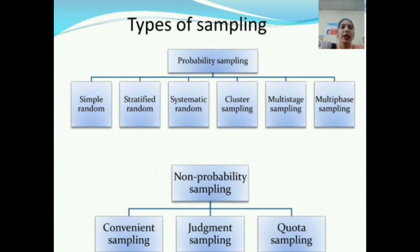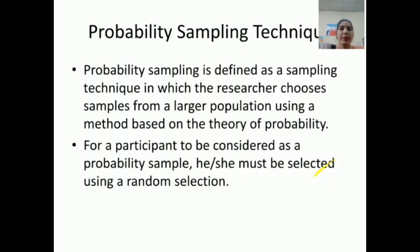There are two types of sampling: probability and non-probability. So non-probability sampling includes convenient sampling, judgment sampling and quota sampling.